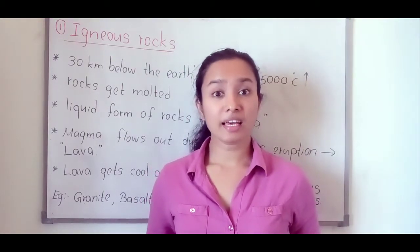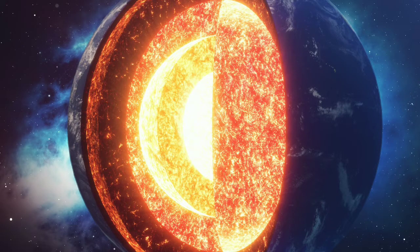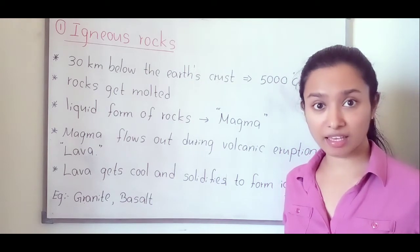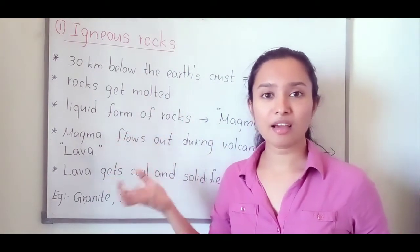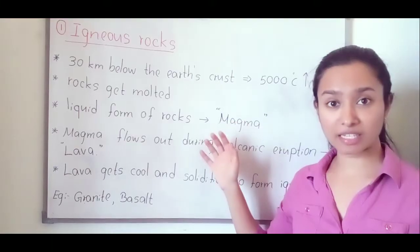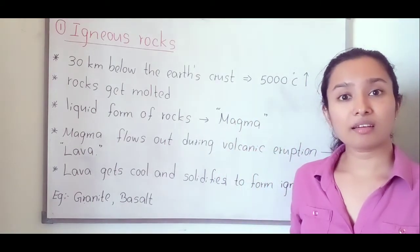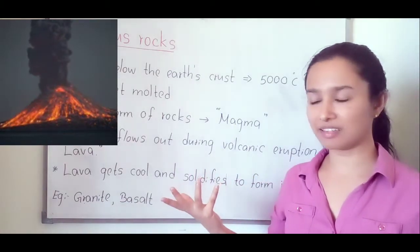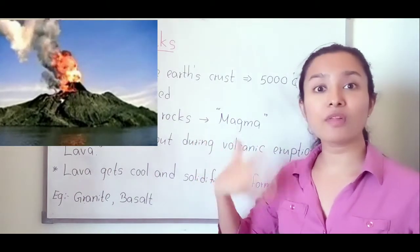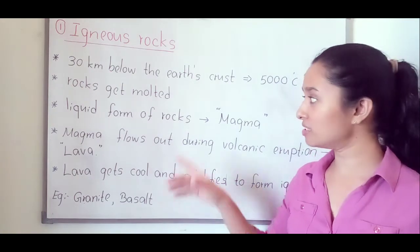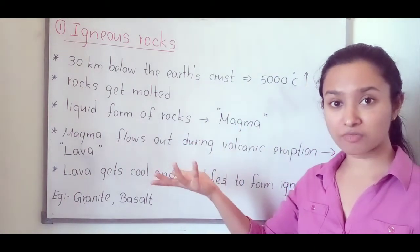The first type of rocks are igneous rocks. About 30 kilometers below in our earth crust, the temperature is very high, so the rocks get melted — that means rocks are in liquid form. We call that liquid form of rocks as magma. During a volcanic eruption, this magma comes out and flows out. The magma inside the earth crust we call magma; when the magma comes out, we call it lava.